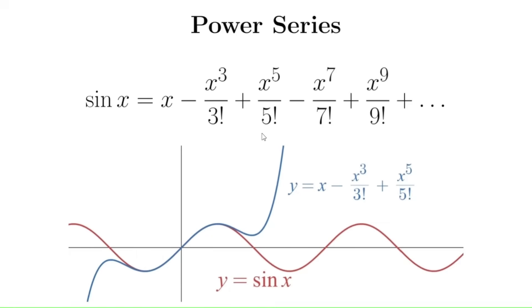Euler sort of thought of this power series as being almost like an infinite degree polynomial. Now it's not a polynomial — of course polynomials can't have infinite degree — but he reasoned that if we can factor polynomials based on their roots, their zeros, maybe we can do the same thing with sine, since we know what the zeros of sine are.